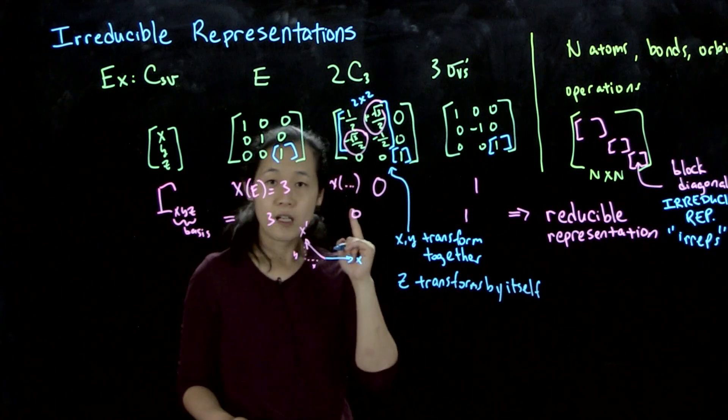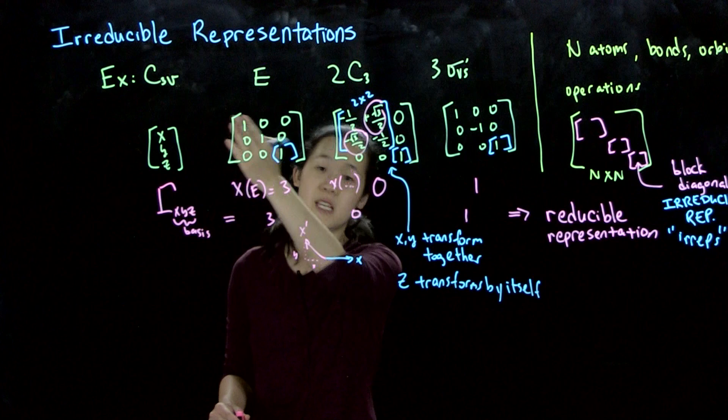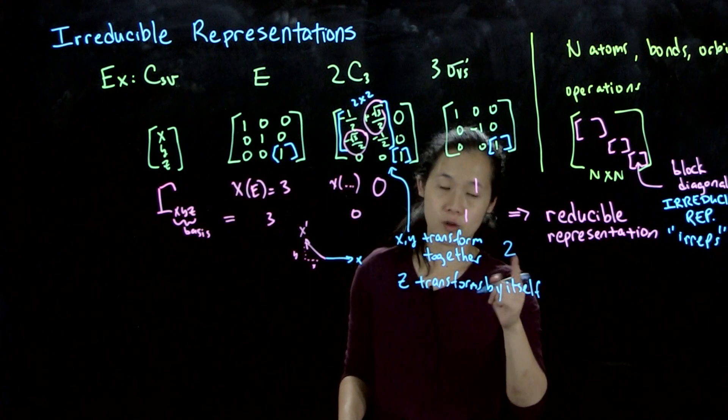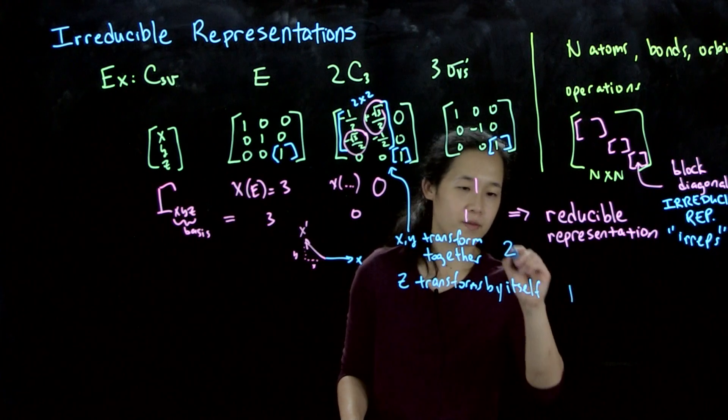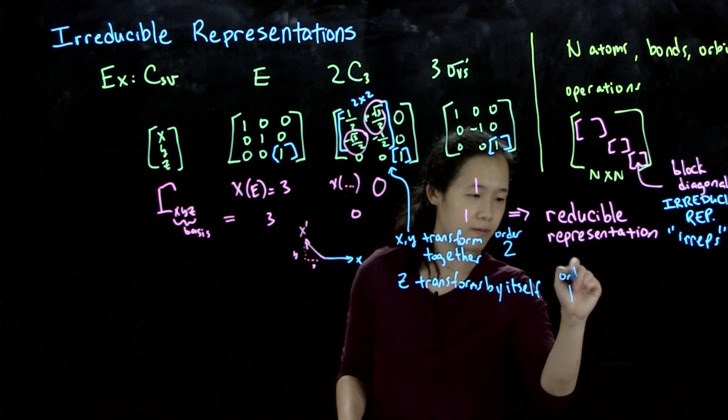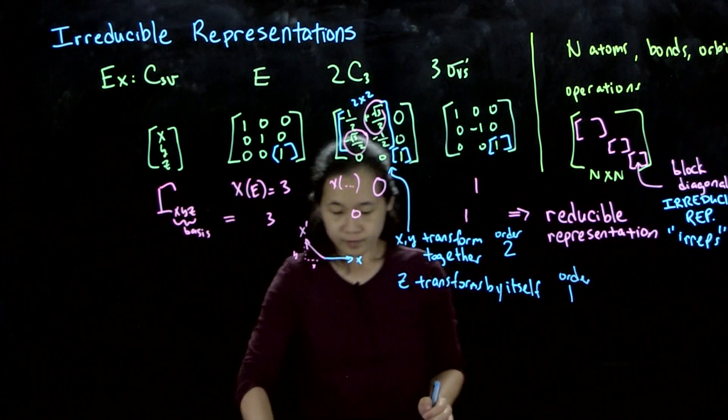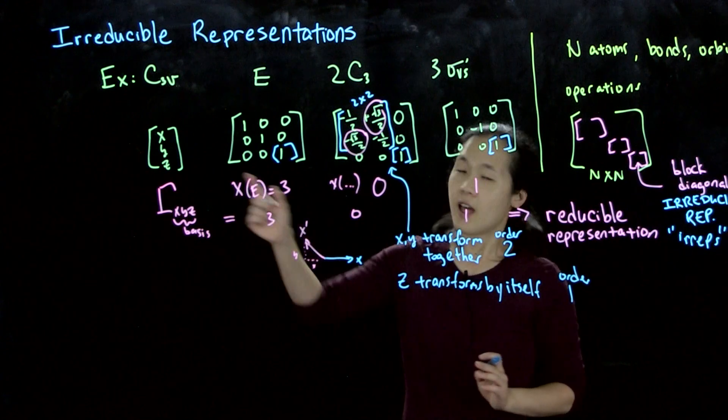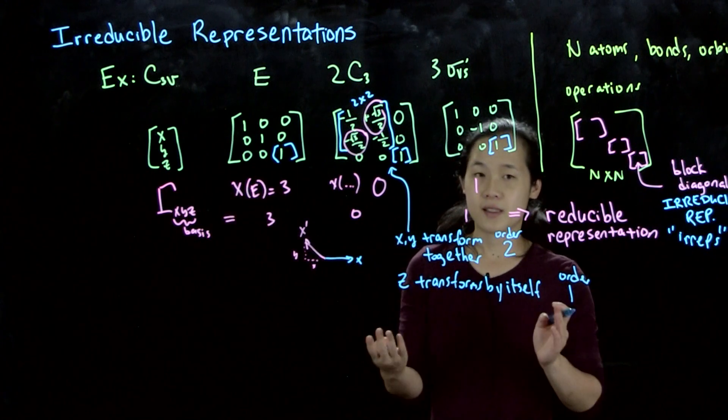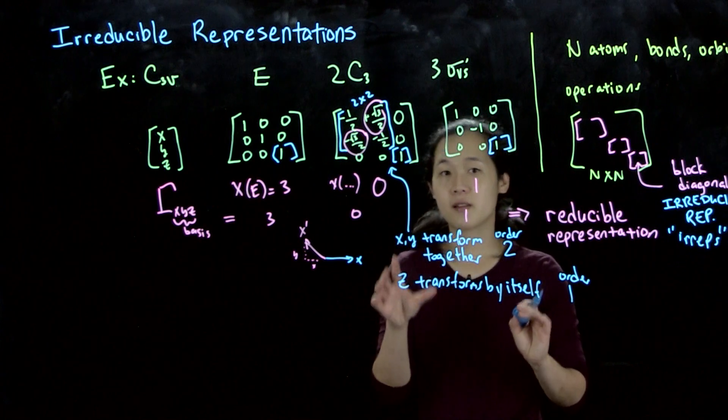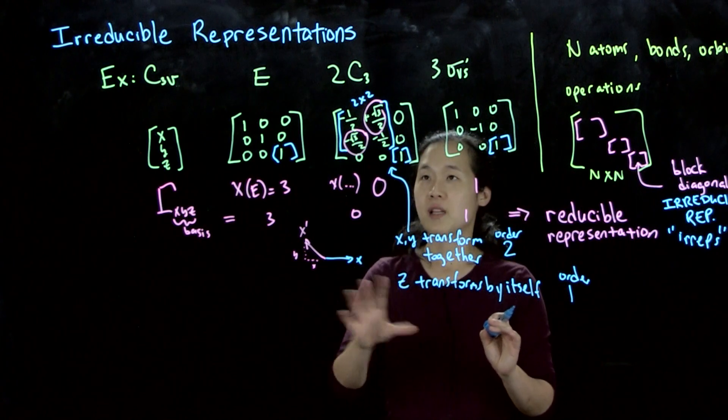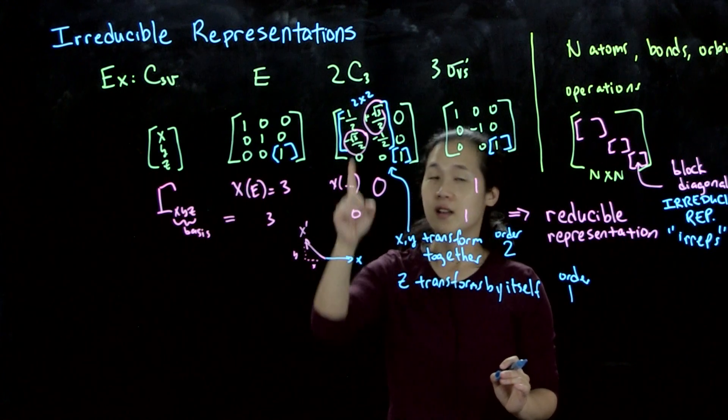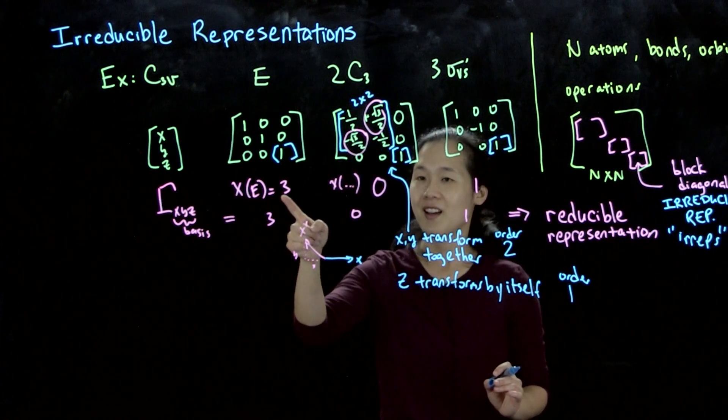The z component can be block diagonalized. Z transforms by itself. So when we look at the irreducible representations that make up C3V, we know there's got to be at least one that's of order 2 and one that's of order 1. The remaining question is, are there other irreps that we need?